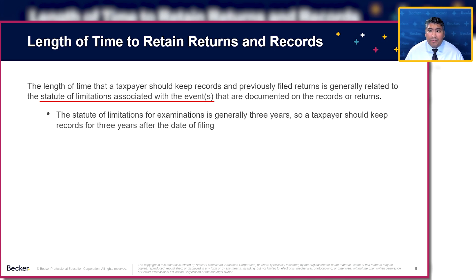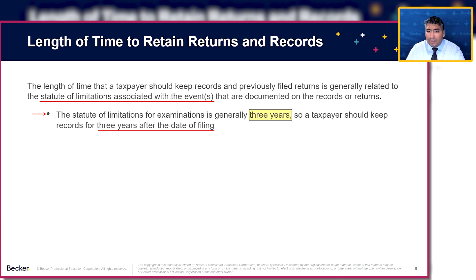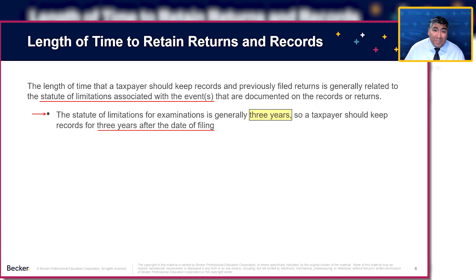The main one that everyone is aware of is that the statute of limitations for examinations is generally three years, so a taxpayer should keep records for three years after the date of filing. This is the most common one. I'll have a client walk out holding their giant box of receipts and ask, 'Carter, how long am I supposed to keep hold of all of these?' And I say, 'Generally you're going to want to hold them for three years, unless you're keeping a lot of income information from me.' We'll talk about that in a couple of slides.